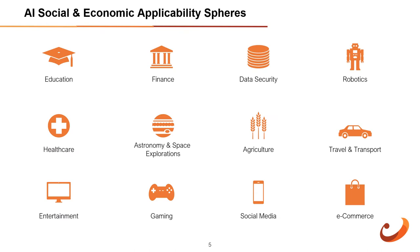Artificial intelligence has various applications in today's society. It is becoming essential because it can solve complex problems efficiently in multiple industries such as healthcare, entertainment, finance, and education. AI is making our daily life more comfortable and fast. AI can automate grading so that the tutor can have more time to teach. AI chatbots can communicate with students as a teaching assistant. In the future, AI can work as a personal virtual tutor accessible at any time and any place.